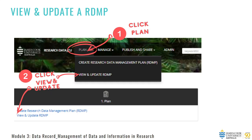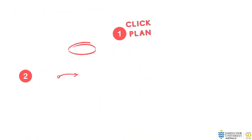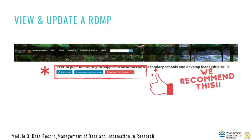Because you created an RDMP at the start of your project and continued to update this information as your project progressed, this will make completing your data record easy as most of the information is automatically populated from your RDMP into your data record. However, I can't stress enough the importance of viewing and updating your RDMP before you create a data record, as these details are auto-populated through to the data record. If you require further editing of your plan, simply click 'Edit this plan'. Or if you are happy to proceed, click 'Create a data record from this plan' and you will find yourself in a data record. You will also notice that you can print off a PDF of your RDMP, which is especially handy to attach to an ethics application if required or your confirmation of candidature paperwork.